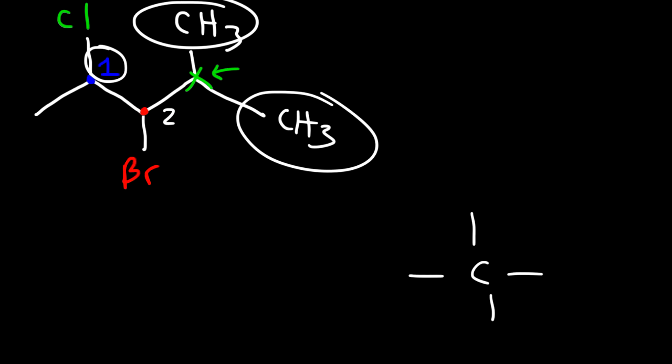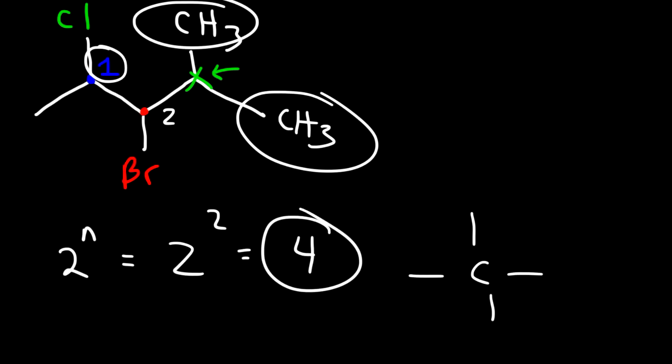So how many possible stereoisomers can we get for this molecule? The number of stereoisomers that can be produced is 2 to the n. So it's 2 squared, which in this case is going to be 4.